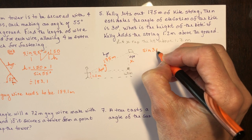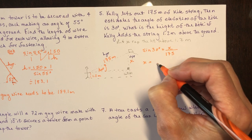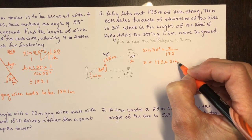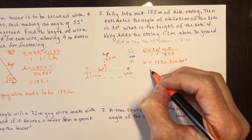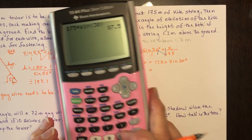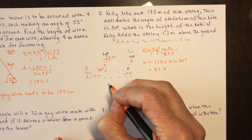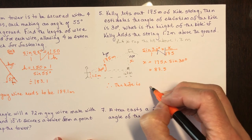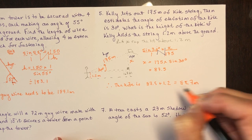sin(30°) = X / 175 → X = 175 × sin(30°) = 87.5 meters. Now I want the total height above the ground: therefore the kite is 87.5 + 1.2 = 88.7 meters above the ground. If you have something held above ground that you need to add in at the end, that's just a little extra step.